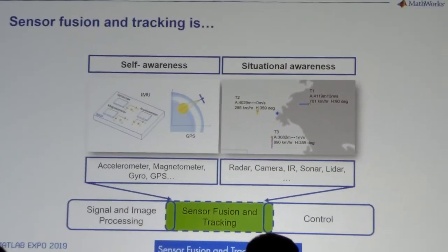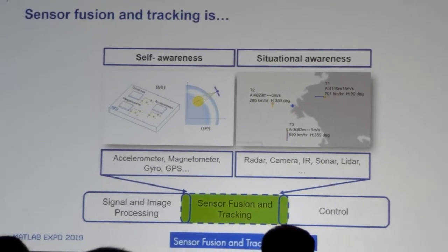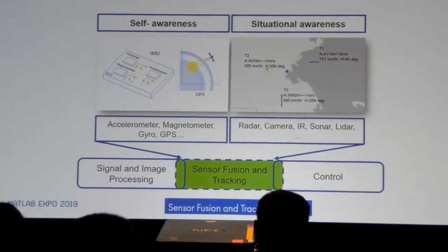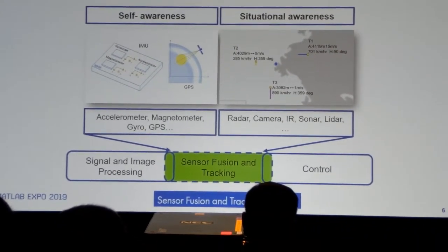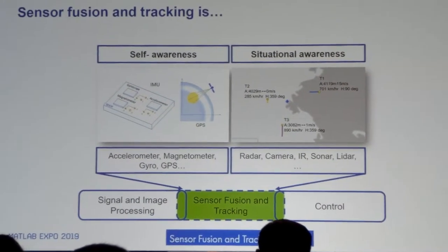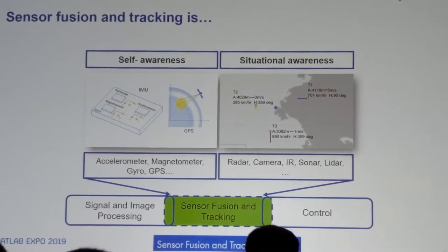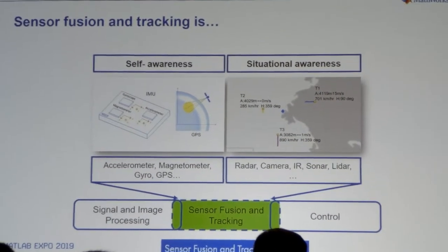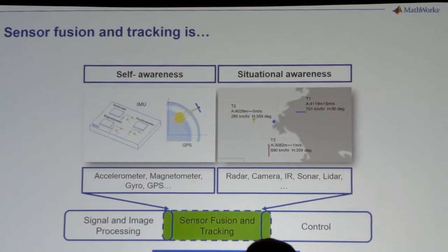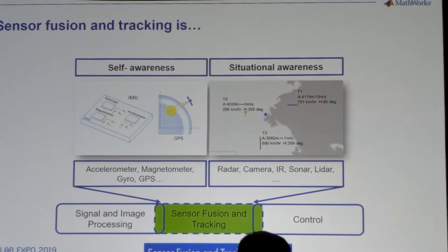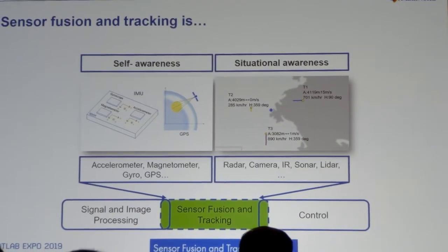From one side, signal and image processing, and the other side, the controls domain. So it's really helping bridge those domains and close the loop. The Sensor Fusion and Tracking Toolbox was introduced in 2018b and has continued to evolve with each release.